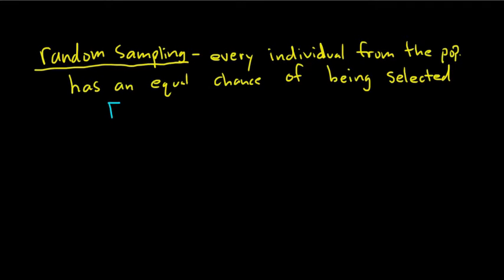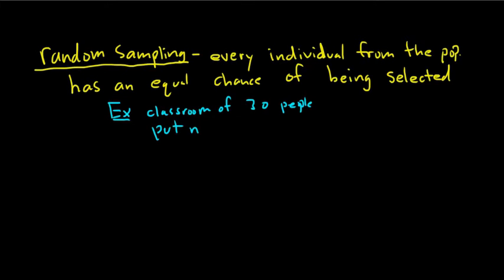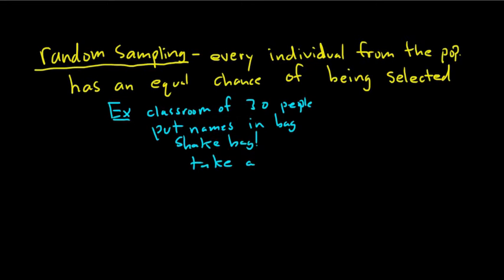A simple example would be a classroom of 30 people. They put their names in a bag, shake the bag, and then take a name. Every single person in this class has an equal chance of being selected.